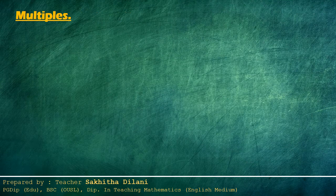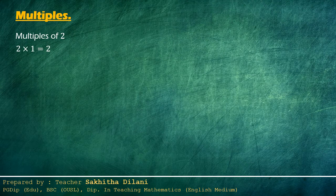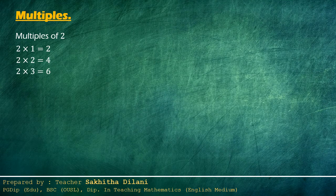A number obtained by multiplying two by a whole number is known as a multiple of two. The first multiple of two is two times one, which is two. The second multiple is two times two, which is four. The third multiple of two is two times three, which is six. The fourth multiple of two is two times four, which is eight. The fifth multiple of two is two times five, which is ten.